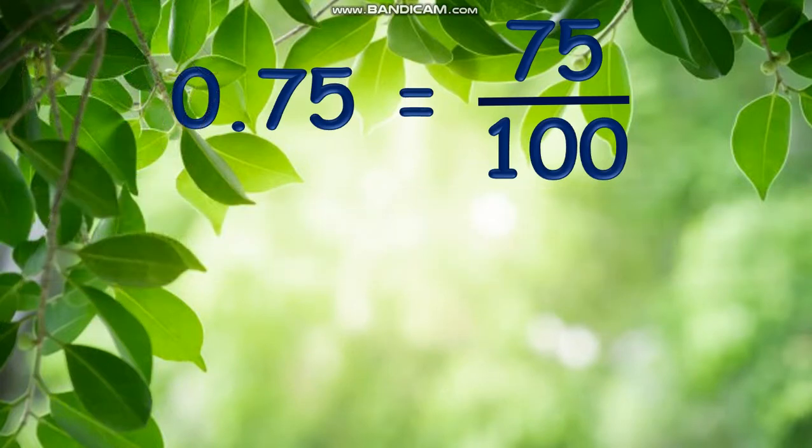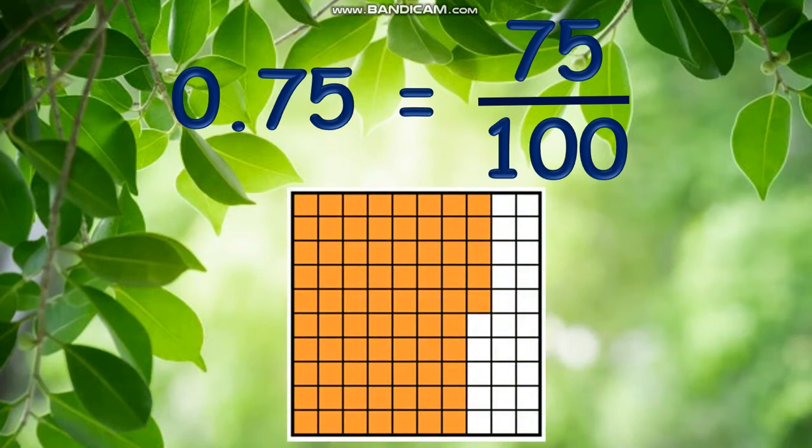Using a grid, we can visualize 75 hundredths or point 75 by this illustration: 75 shaded parts out of 100 equal parts.